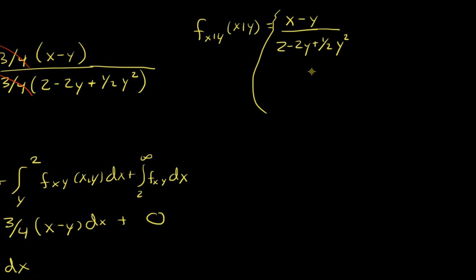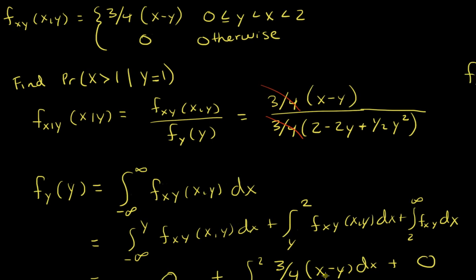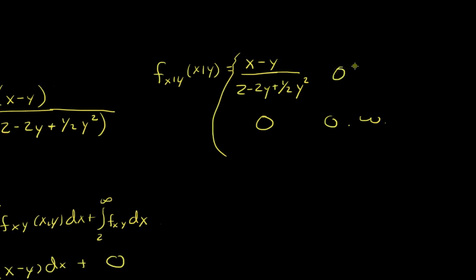Don't forget your support. In a conditional distribution, y is not random, but it still needs to meet the original conditions of the joint distribution. So y can't be equal to 3; the conditional distribution would give zero there because the numerator would be zero. The support is still the same: y is between 0 and 2, and x is between y and 2.